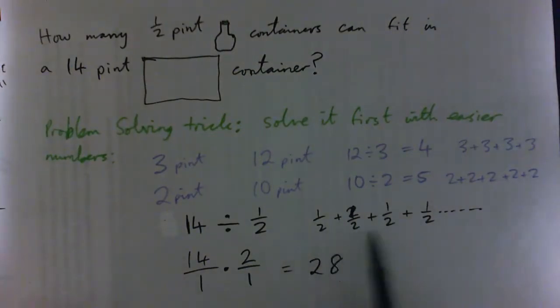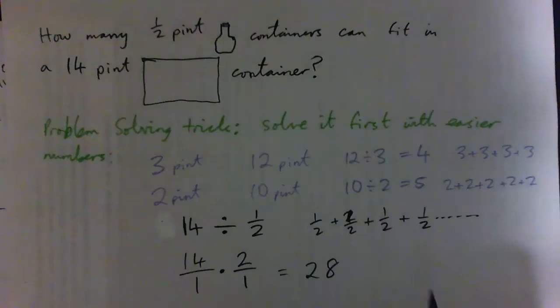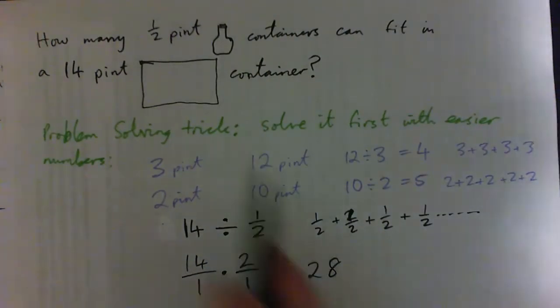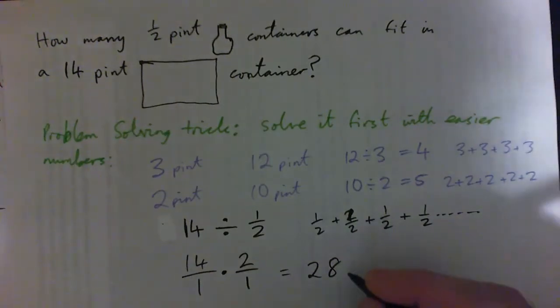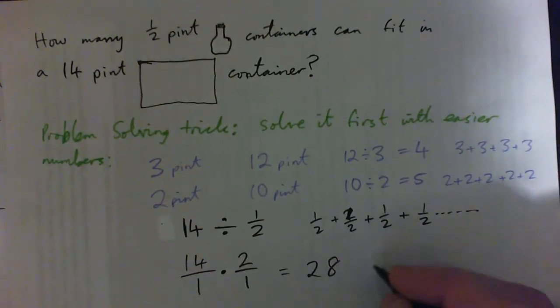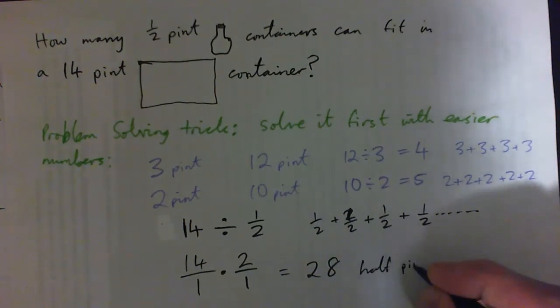If you think about it, you need 28 halves to add up to 14. So 28 half-pint containers would fill up a 14-pint container. The answer is 28 half-pint containers.